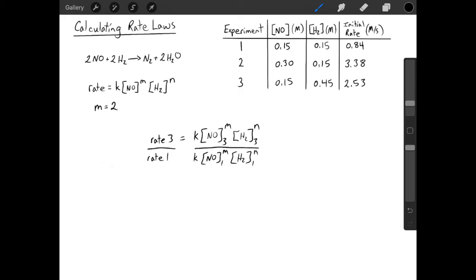K is a constant in both cases, so it cancels. The concentration of nitrogen monoxide in experiment 3 and in experiment 1 are both 0.15 molar, so they cancel.